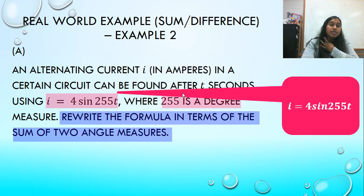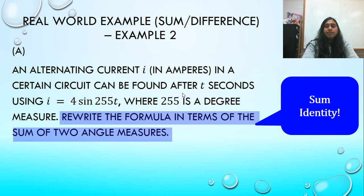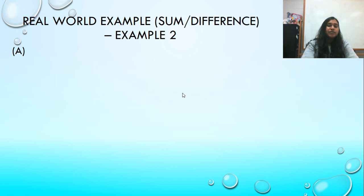i has a unit of amperes. t is a unit of seconds. I have a formula, and I know that I am finding this where 255 is a degree measure. So I know 255 is in degrees. That's not a radian. So I get to use my sum identity and finish it up from there.